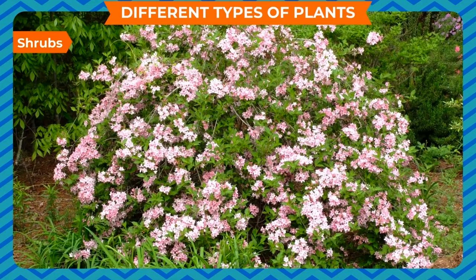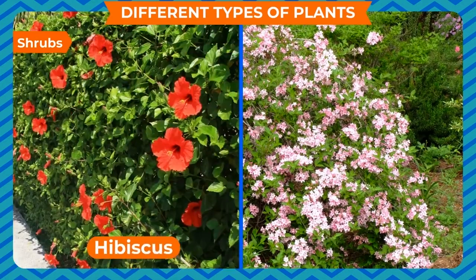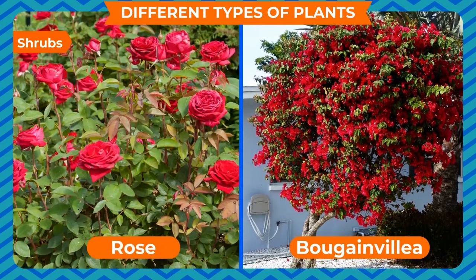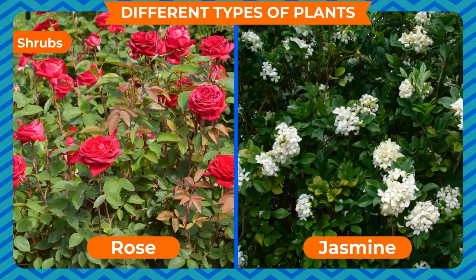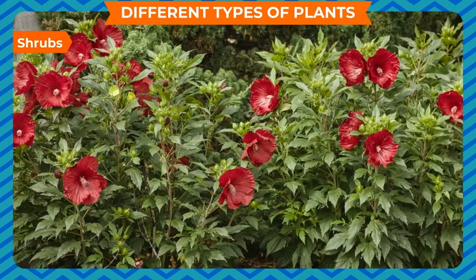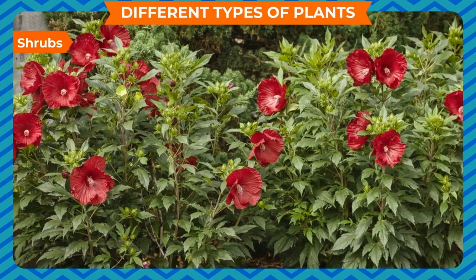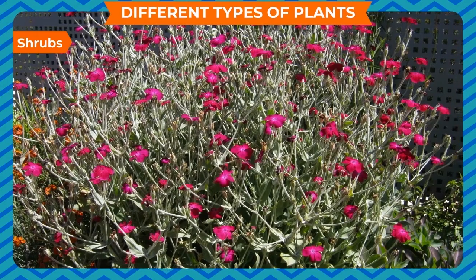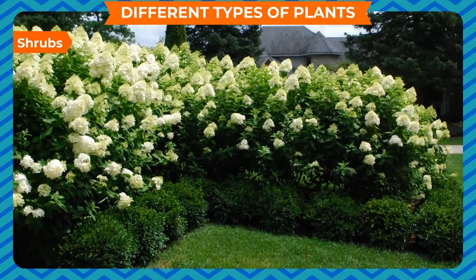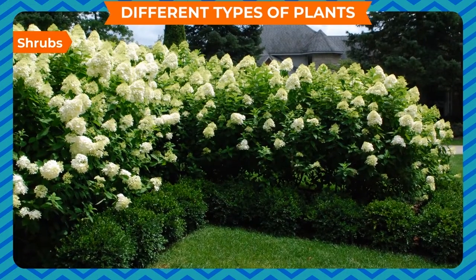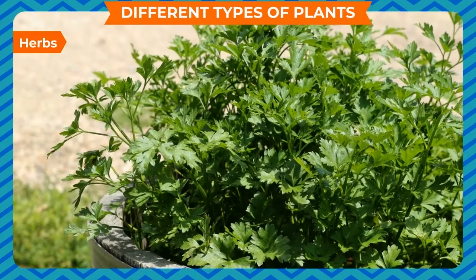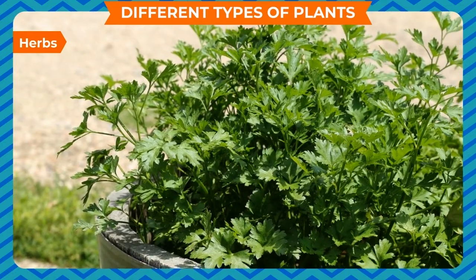SHRUBS: Small, bushy plants such as Hibiscus, Bougainvillea, Rose, Jasmine, etc. are called SHRUBS. They live for a few years. They have woody and hard stems.